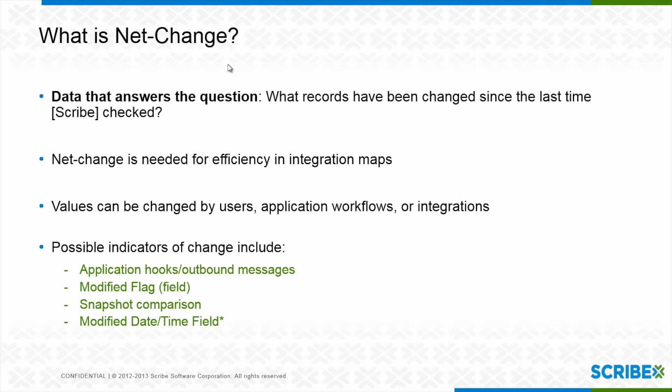I want to talk about what net change is and how you can find that out in Scribe Online. Net change, or the delta, is really what records have changed — the data values in their fields have changed since the last time you looked or Scribe looked.